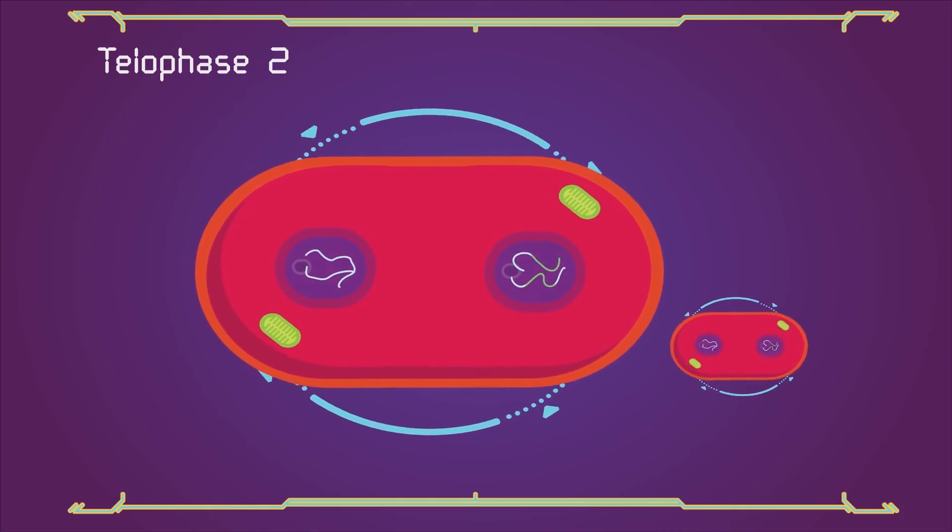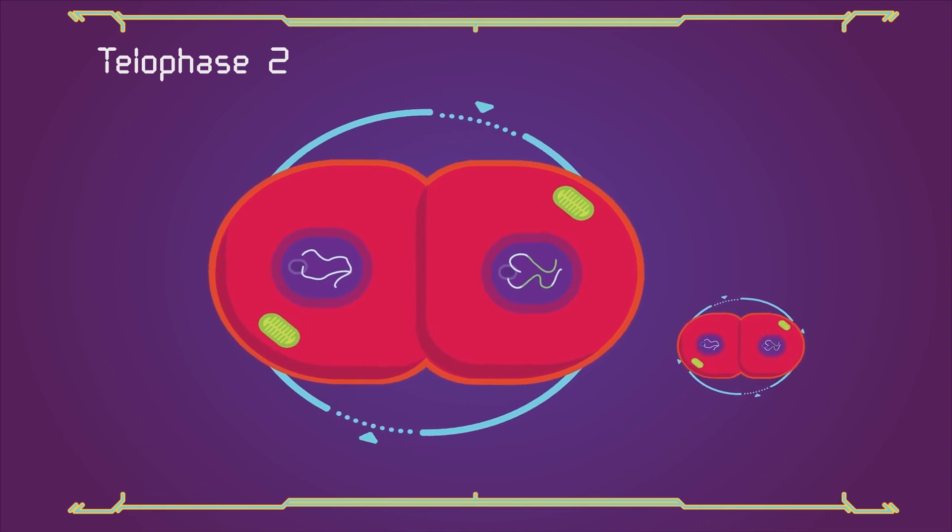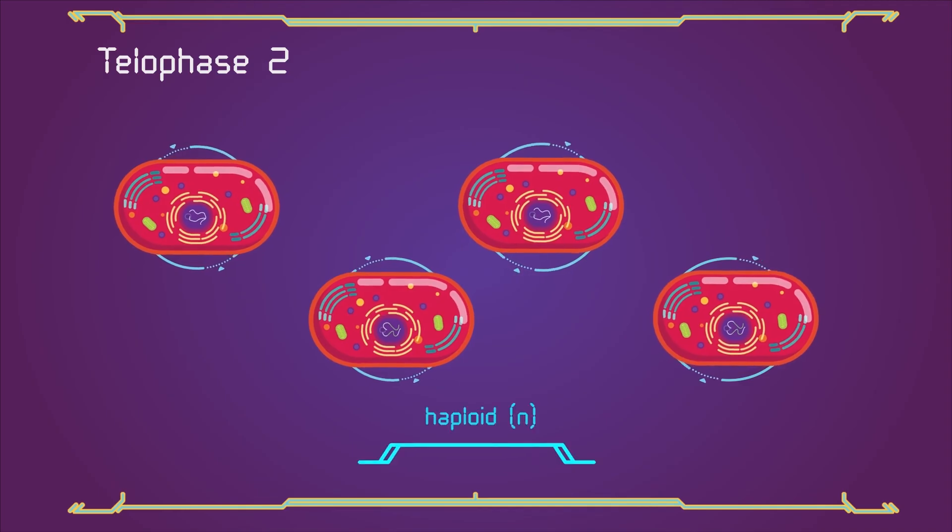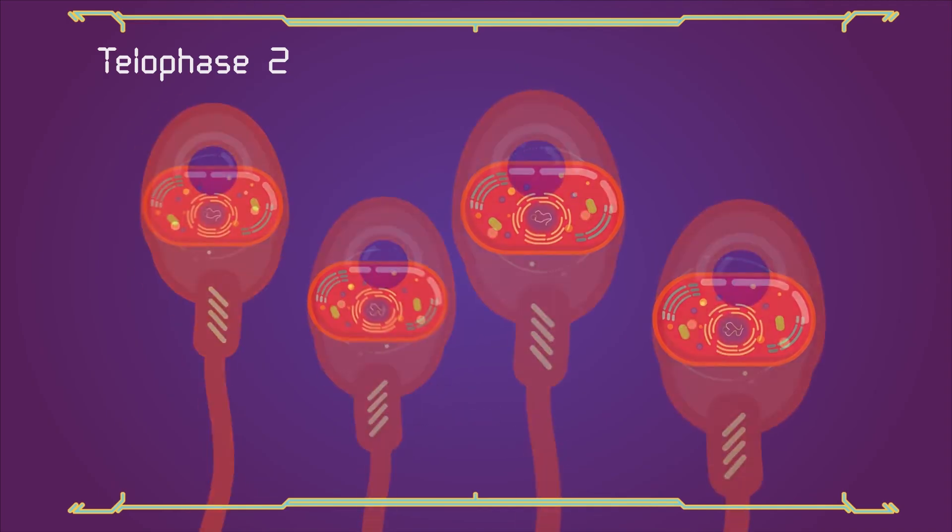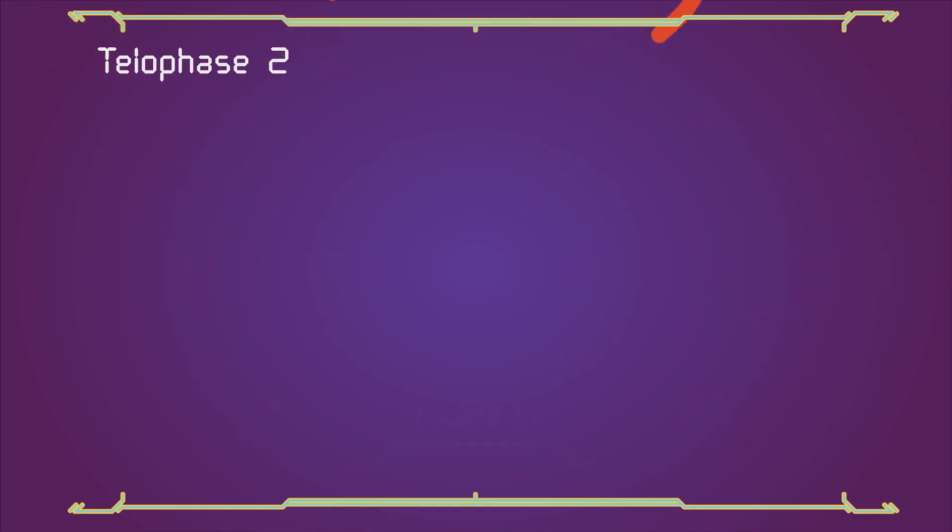Nuclear envelopes reform and cleavage or cell plate formation eventually produces a total of four daughter cells, each with a haploid set of chromosomes. Meiosis is now complete and ends up with four new daughter cells.